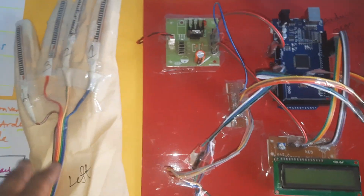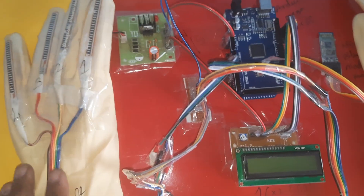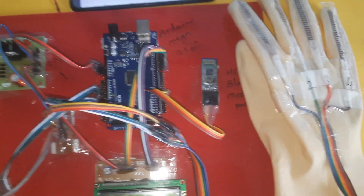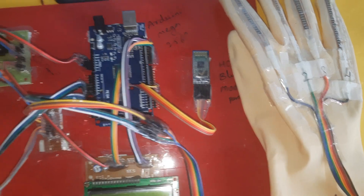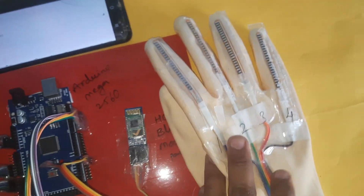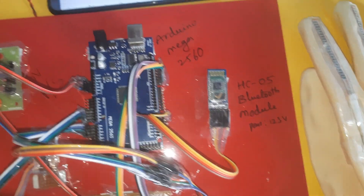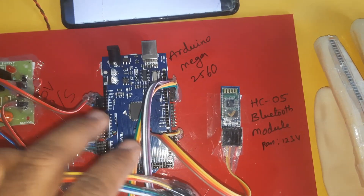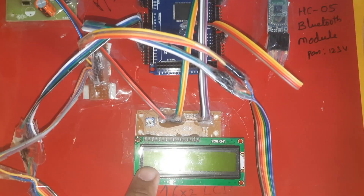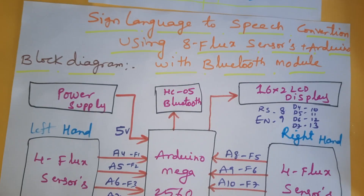Sign language to speech conversion using a total of 8 flex sensors — left hand 4 flex sensors, right hand 4 flex sensors — along with Bluetooth module HC05, Arduino Mega 2560 board, and a 16x2 LCD display. Let us look at the block diagram.